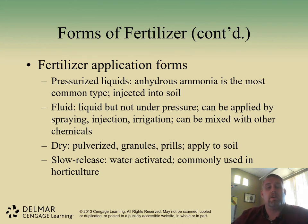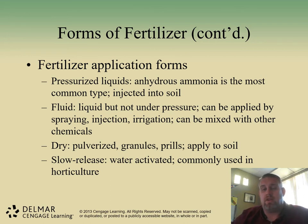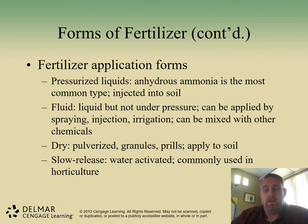There are a few different forms. There are liquid applications or pressurized liquid, there are liquid applications, there are dry, and there are slow release. Pressurized liquid is basically injected into the soil, and anhydrous ammonia is very common to do this. Anhydrous ammonia is a very potent ammonia source and is typically done either highly diluted or before you plant your plants, allowing that ammonia to become a little bit less active in the soil.